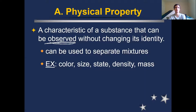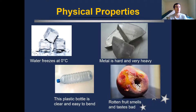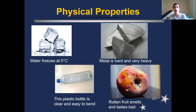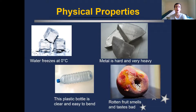Its mass — how heavy something is — is a physical property too. You could also observe if something sounds really loud or quiet, smells really bad, or tastes really sour; those are all physical properties. A plastic bottle is crinkly, small, clear — you can see through it. Metal is really hard, pretty dense and heavy. And food that's rotting smells really bad, and if you take a bite out of a rotting peach or apple, it would taste really gross — that smell and taste are physical properties of that rotting fruit.